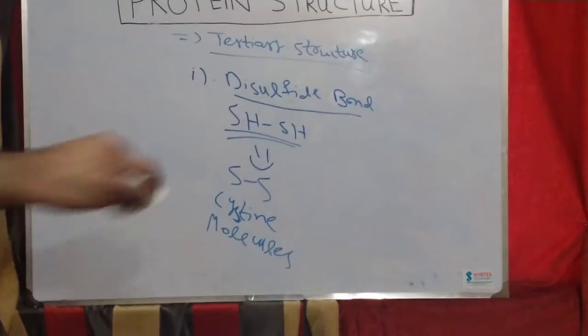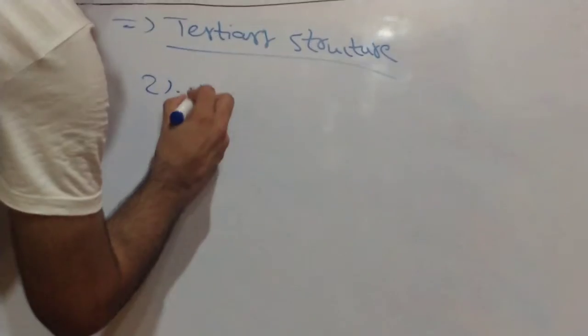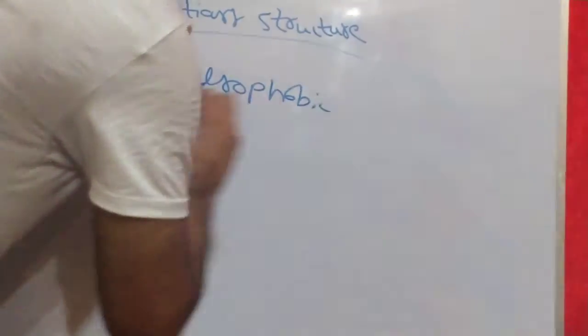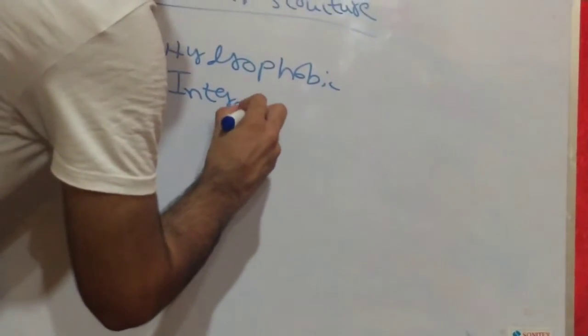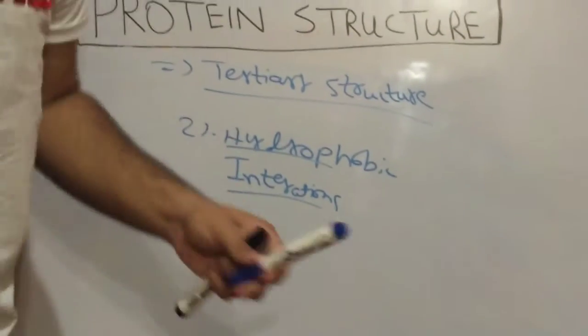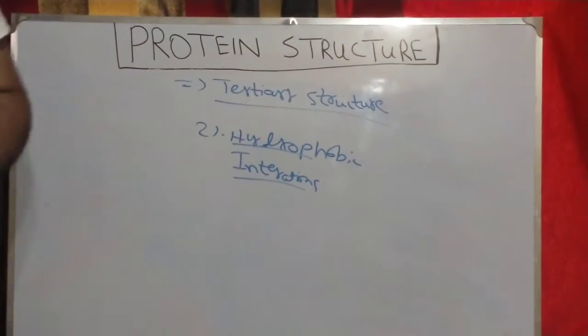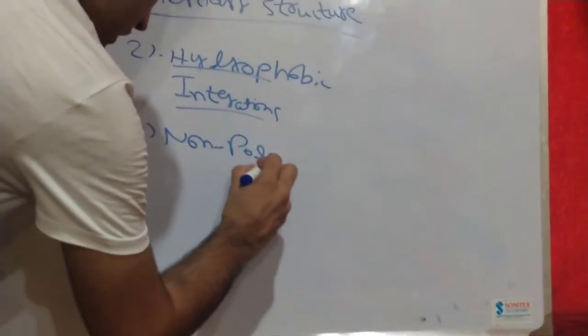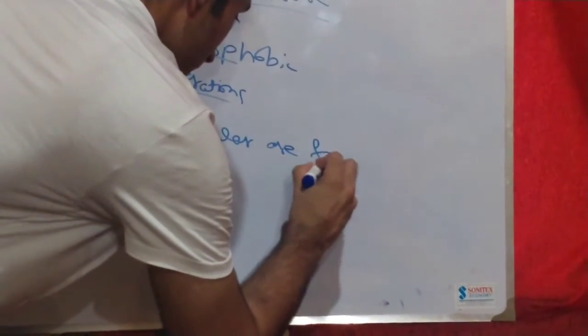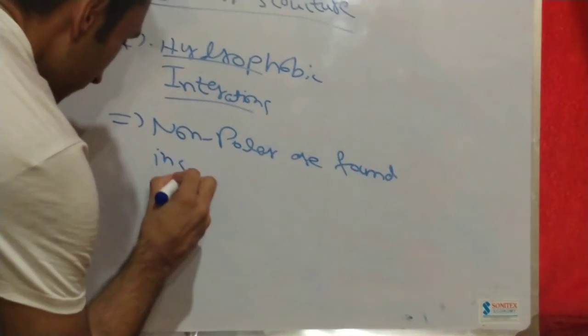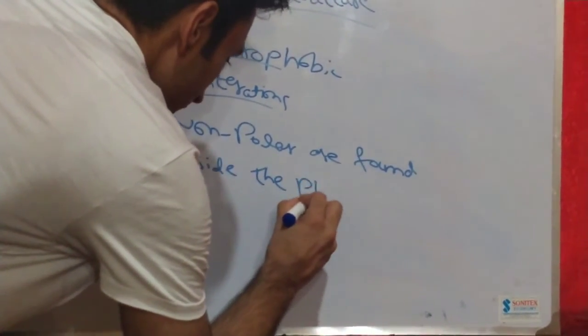Another bond that stabilizes the tertiary structure is hydrophobic interactions. Hydrophobic interactions occur between non-polar amino acids. Non-polar amino acids are buried inside the protein — found in the interior core portion of the protein — and these form hydrophobic interactions between them.